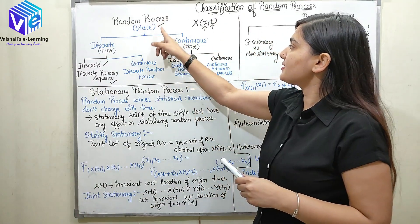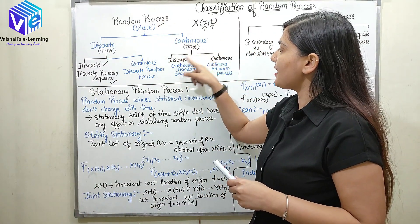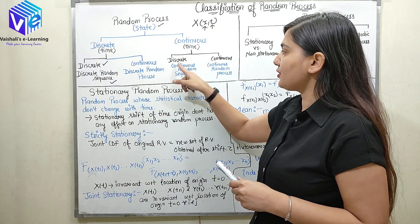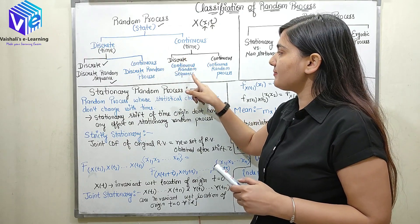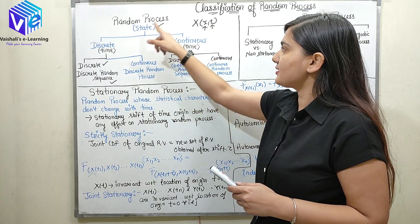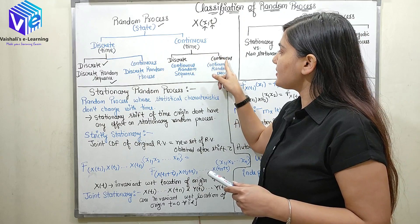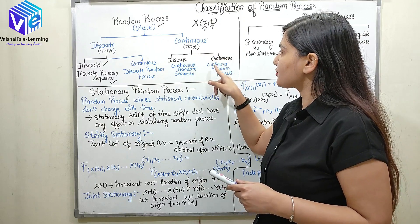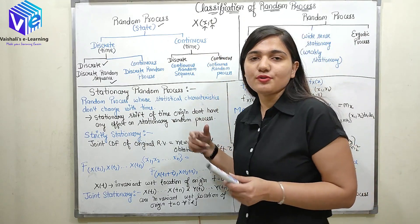When the state is continuous and the time is discrete, it is called a continuous random sequence. When the state is continuous and the time is also continuous, it is called a continuous random process.